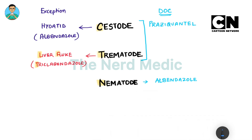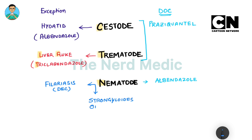Finally, in case of nematodes we have two exceptions. The first exception is filariasis, where we use DEC instead of albendazole. The second exception is strongyloides and onchocerca, and in these two cases we use ivermectin.